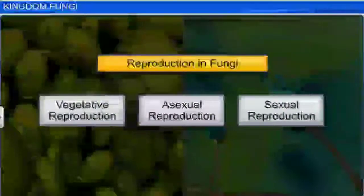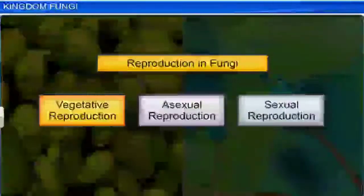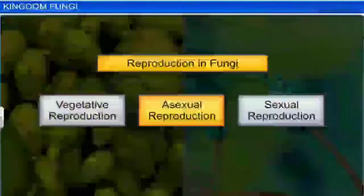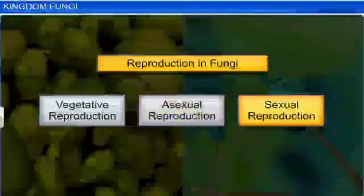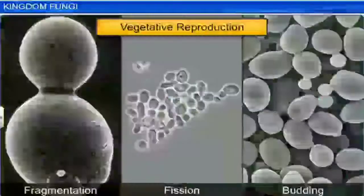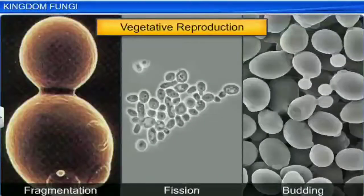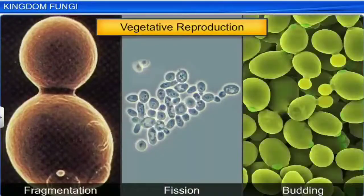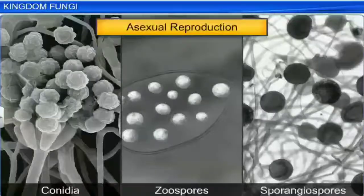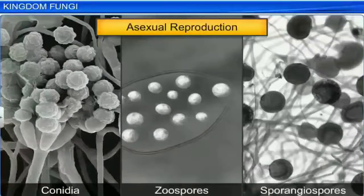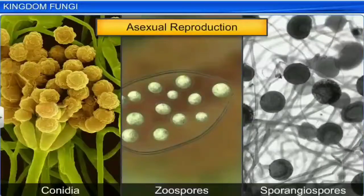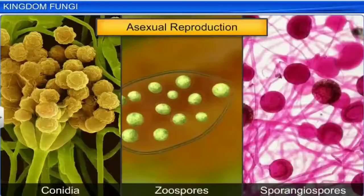Fungi can reproduce vegetatively, asexually, as well as sexually. Fungi reproduce vegetatively by fragmentation, fission, and budding. They can reproduce asexually by either one of the following spores: Conidia, Zoospores, or Sporangiospores.